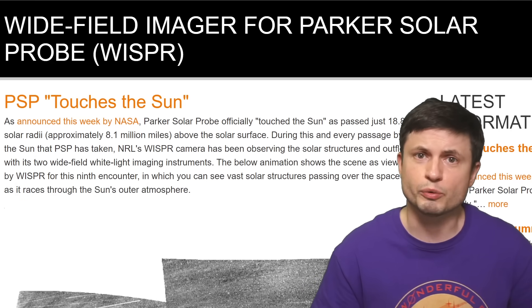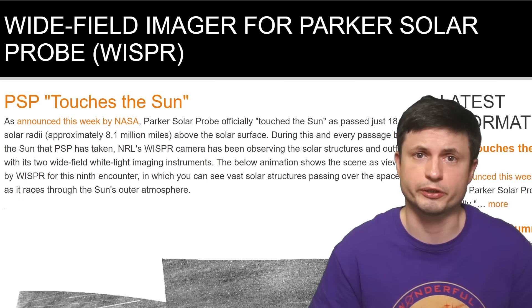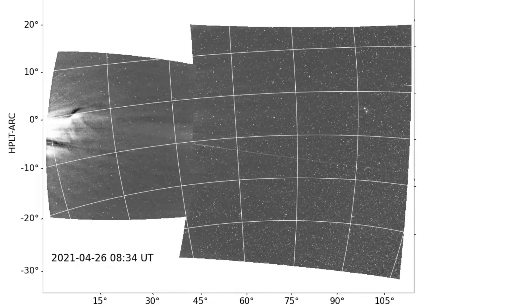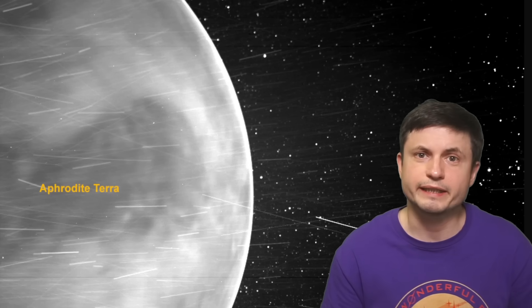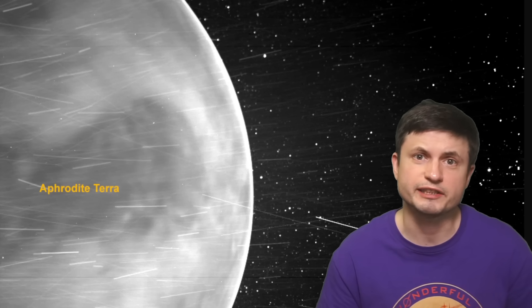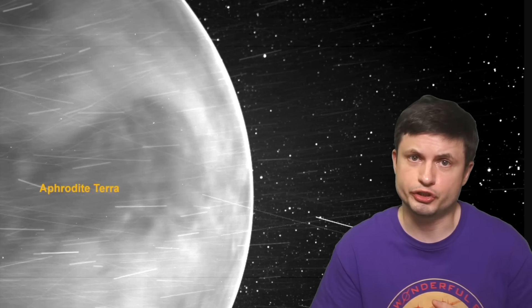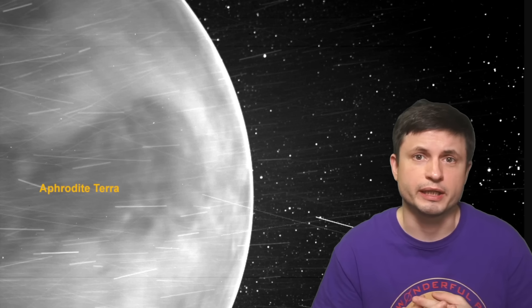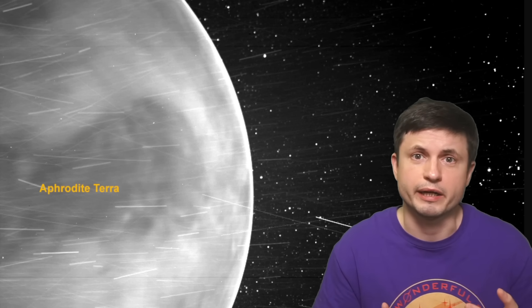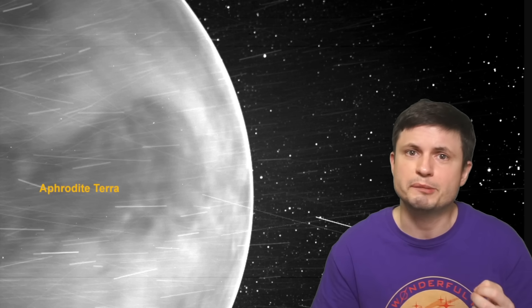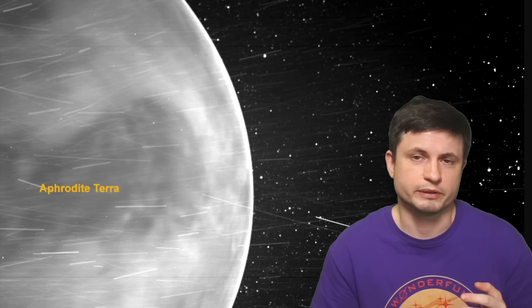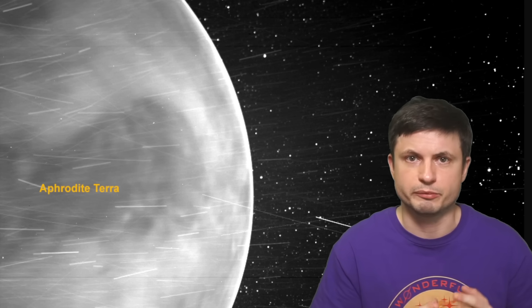During this time it used one of its instruments known as WISPR, the instrument that's been producing this incredible image of the solar corona that we've already seen in some of the previous videos, to once again take some of the pictures of Venus as it was passing by. And the thing about WISPR is that it generally receives the pictures in a relatively similar spectrum of light as our eyes. It's essentially taking optical images but it's also able to see a little bit of the infrared. The point is that it was able to take some new shots of Venus that were previously unavailable.